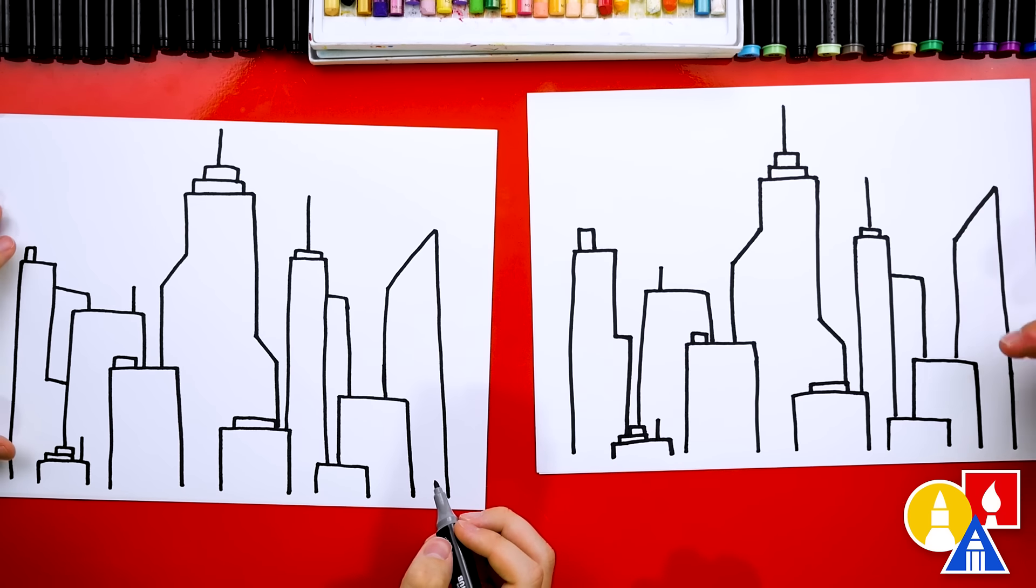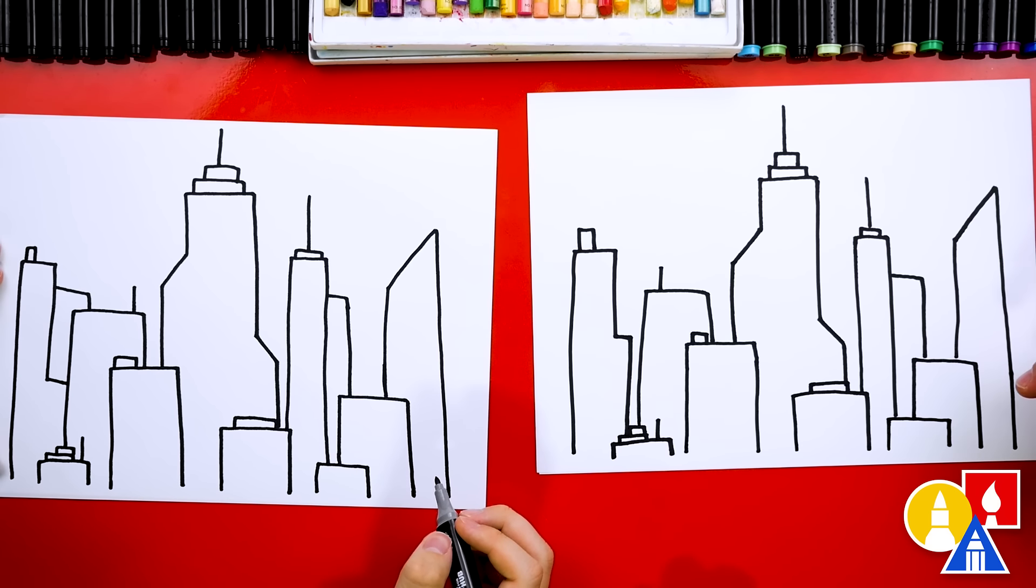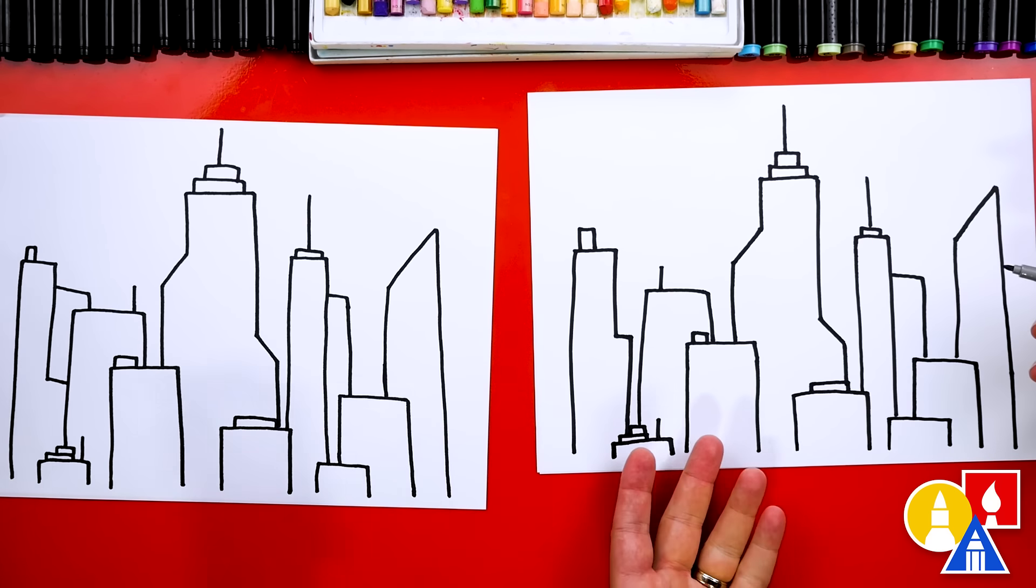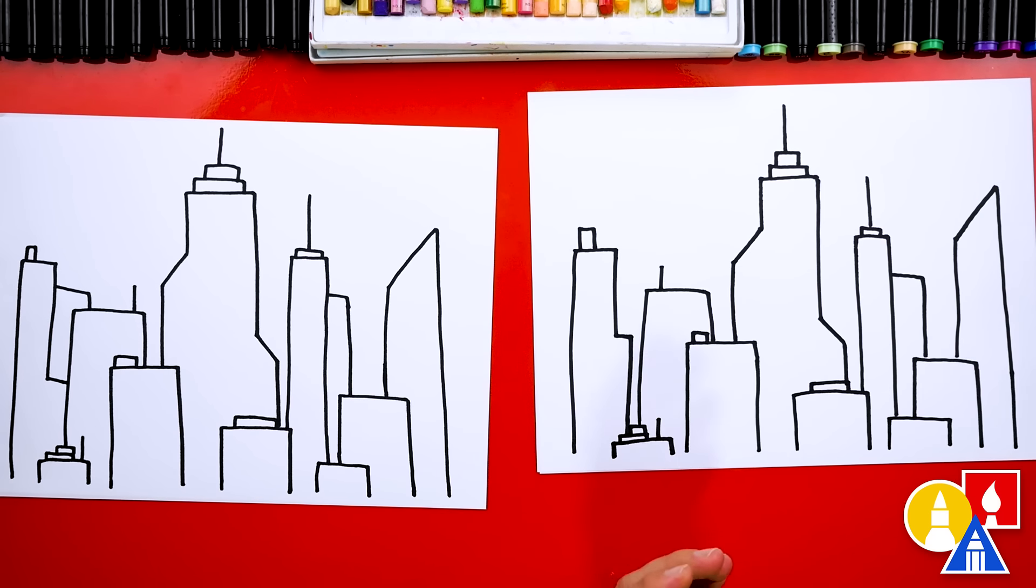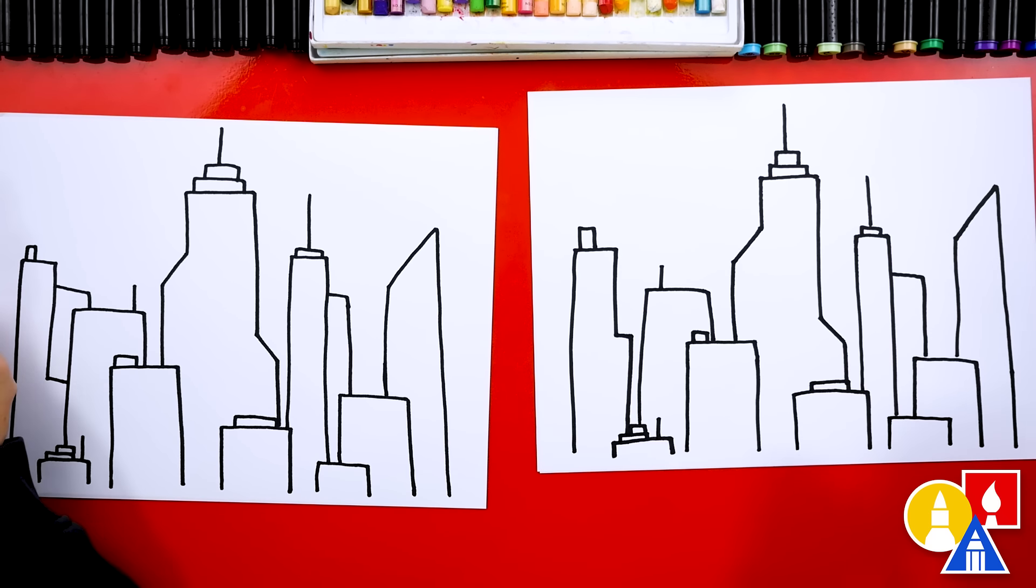And that's it. We did it. We're not completely done. Still need to color it and add more details like the windows. These kind of just look like shapes. So let's switch to our color markers and we'll come right back.